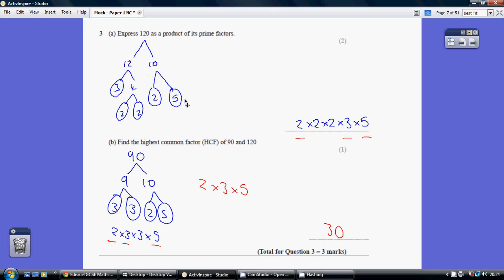Now 3, 2 and 5 are all prime, you can't make those any smaller. So put circles around those. We can carry on with the 4, 2 2's are 4. So now we put circles on those.